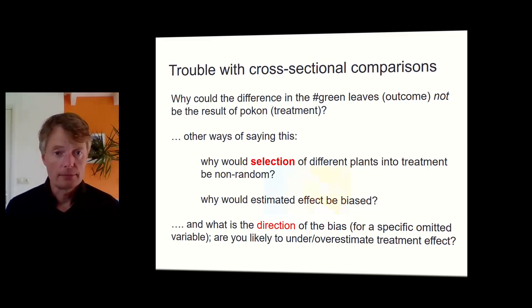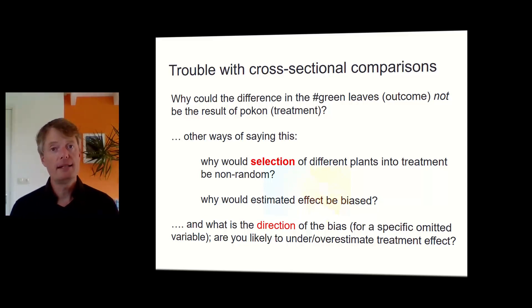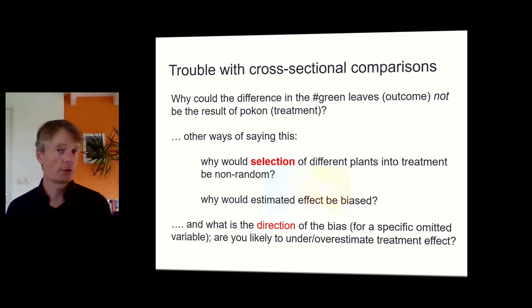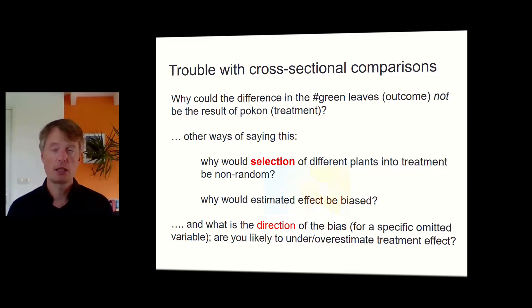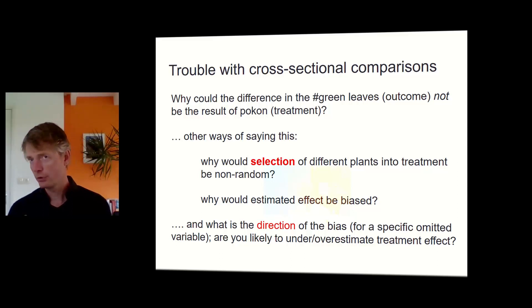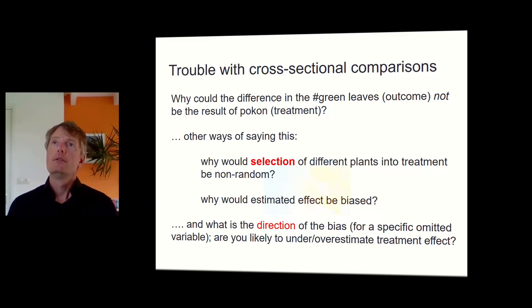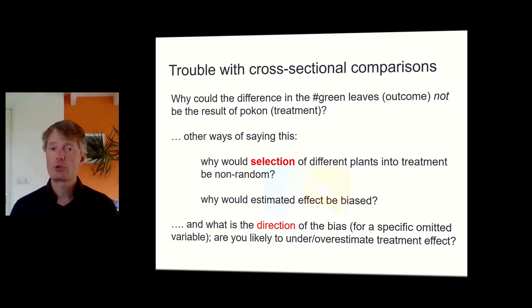There are very similar problems with cross-sectional comparisons. Why did this group of plants get POCON? It may be because those plants were not looking great, or because the person who really cared about the plants not only administered POCON but also started regularly watering them. Again, there are all kinds of reasons to think there may be non-random selection into treatment, leading to selection bias.